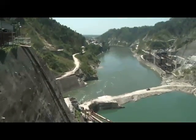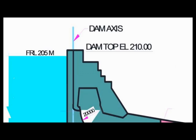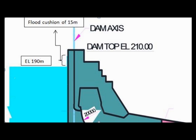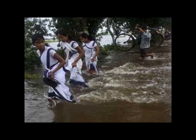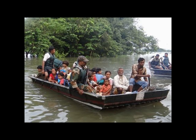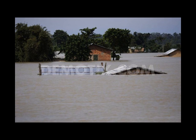The Subhansali Lower project is planned for providing flood cushion during monsoon at the cost of energy by operating its reservoir at a low level. As such, Assam will be benefited from the project, as reservoir operation is primarily for flood attenuation or moderation during the monsoon period, which otherwise would have been used for power generation.